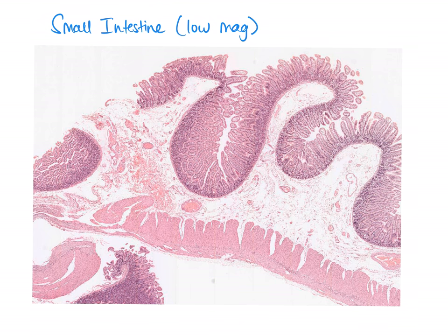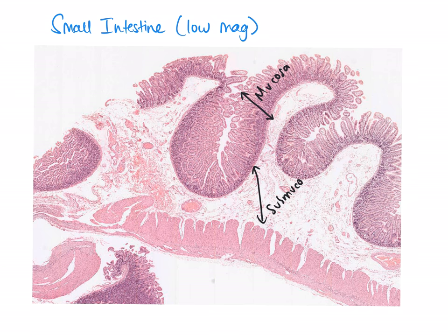Continuing down the gastrointestinal tract to a low magnification image of the small intestine: all four layers making up the wall are really obvious here. We have the mucosa layer, which is quite dark, then the submucosa layer — fairly pale but in real life tends to be denser — then the muscularis layer, which enables peristalsis, segmentation, and mixing of food with acids, and finally the serosa layer, which keeps the small intestine wet and slippery to reduce friction.